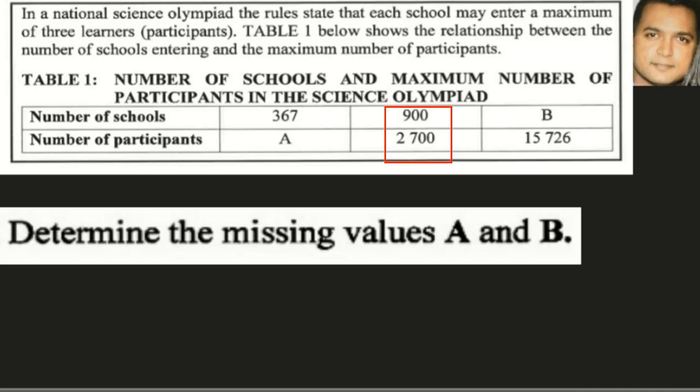If you look at 900 and 2700, we can see that if they were speaking about three learners per school, then obviously the 900 was multiplied by three in order for us to get 2700.